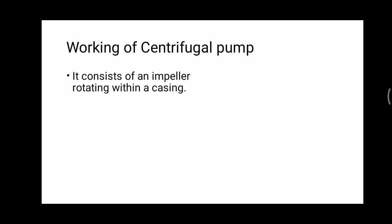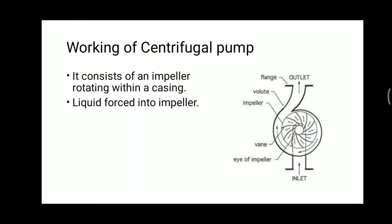Now the working of the centrifugal pump — this is one of the most important parts of the lecture. The pump consists of an impeller rotating within a casing. The liquid is forced into the impeller. Before discussing further, an important phenomenon called priming will be discussed. The impeller and casing must be under water — a sufficient amount of water must be provided inside the casing.